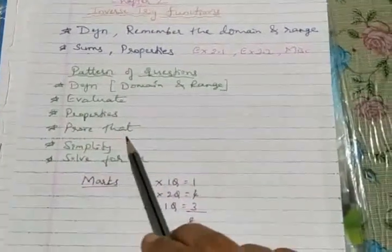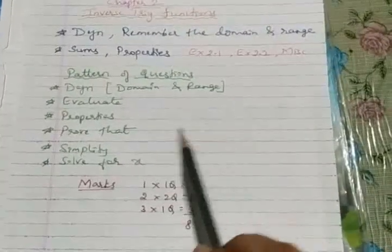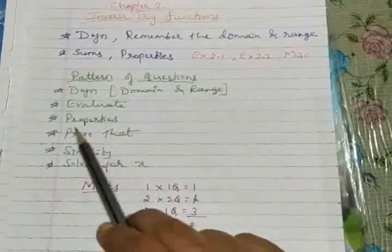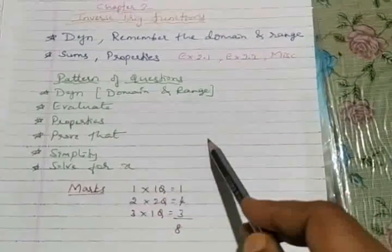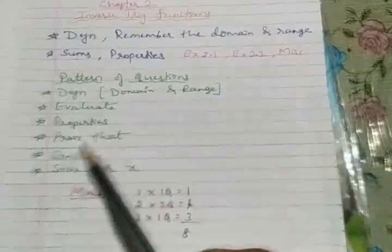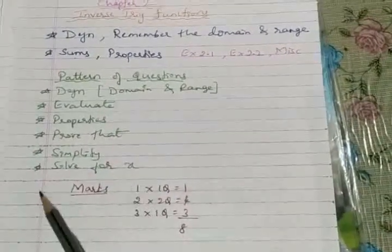Followed by we have prove that, numerical sums LHS to RHS, LHS to RHS. Prove that question is very simple one, because you know the question is also given and what's the target to reach, its RHS is also given. So this question, prove that question is quite interesting.